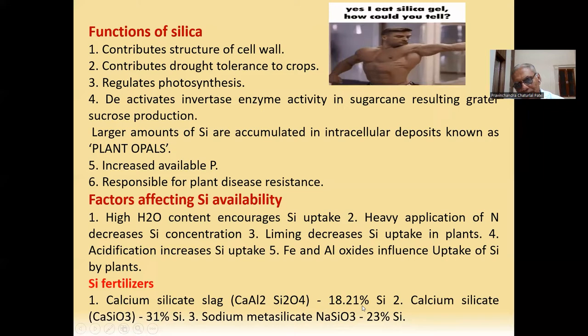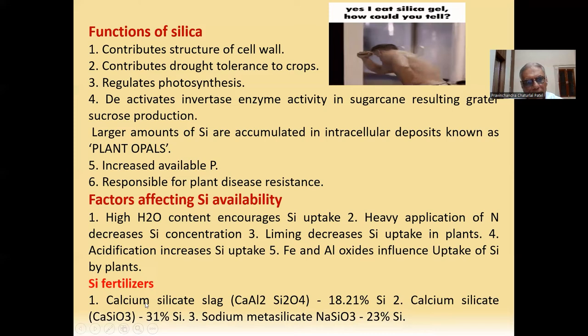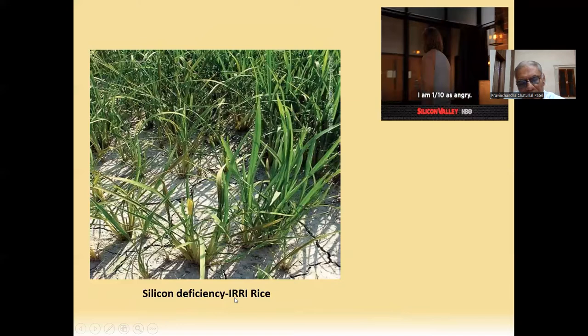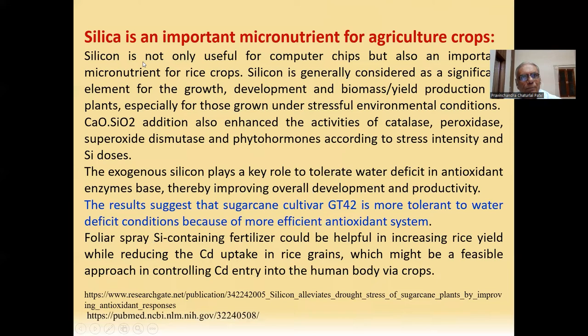Silicon fertilizers include: calcium silicate slag at 18 to 21 percent silicon; calcium silicate at 31 percent silicon; and sodium metasilicate at 23 percent silicon — these are sources of silicon fertilizer. Regarding silicon deficiency, the International Rice Research Institute in the Philippines shows the growth of rice crop affected by silicon deficiency. Silicon is an important micronutrient for agricultural crops — it is not only useful for computer chips, but also an important micronutrient for rice crops. Silicon is generally considered a significant element for growth, development and biomass yield production in plants, especially for those grown under stressful environmental conditions.